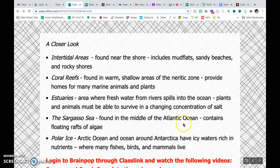Out in the middle of the Atlantic Ocean, there is this huge floating raft of algae. It's called the Sargasso Sea. So it's not really a sea, but it's a sea of algae. And then polar ice. The Arctic Ocean and the ocean around Antarctica have icy waters that are rich in nutrients. They have an abundance of fishes, birds, and mammals. You learned this as you watched the videos last week when we went to the Arctic.